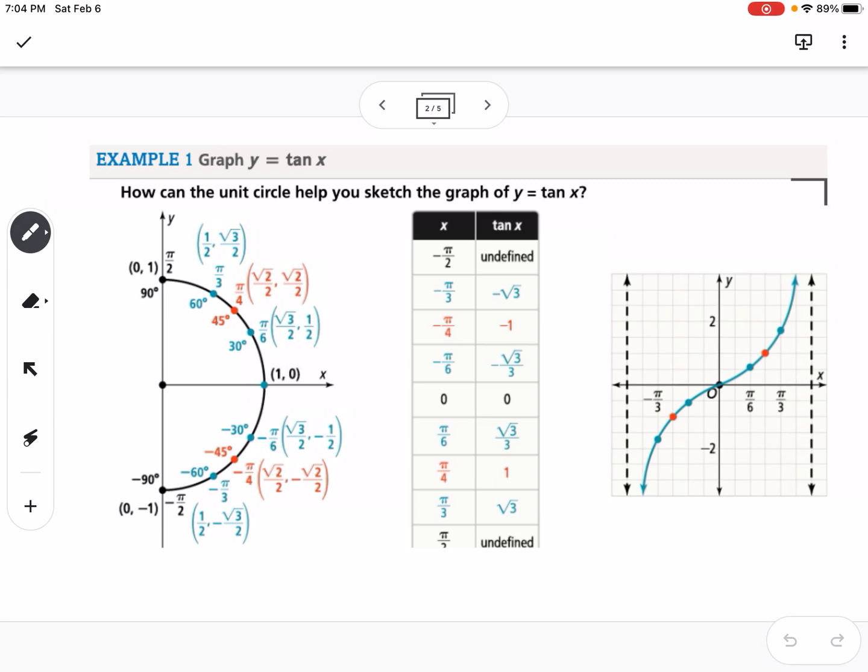So to start out with, we're going to look at tangent. So again, if we come back to the unit circle, sine is y, cosine is x, tangent is y over x.